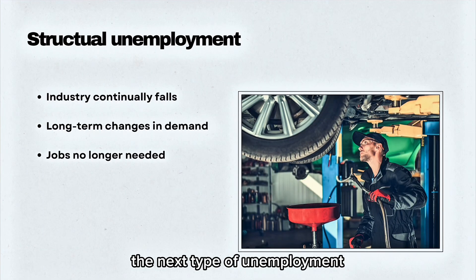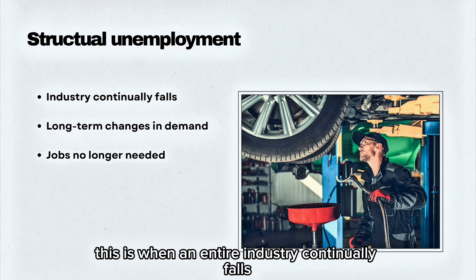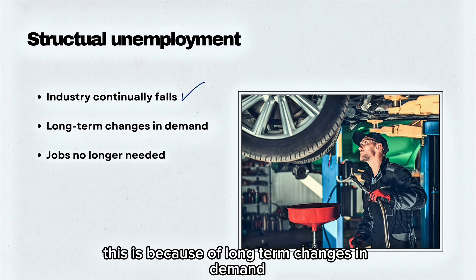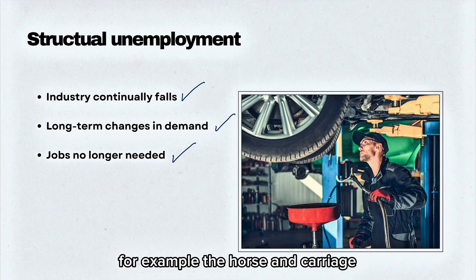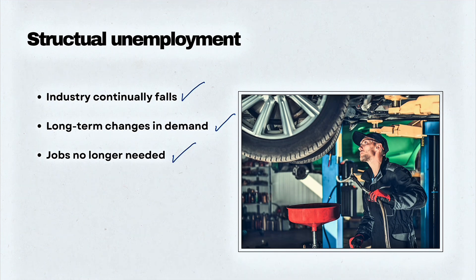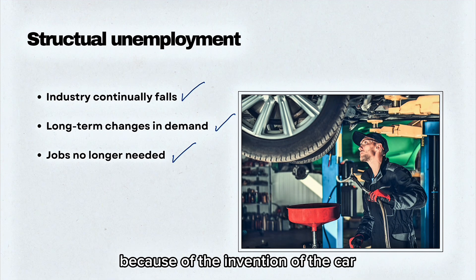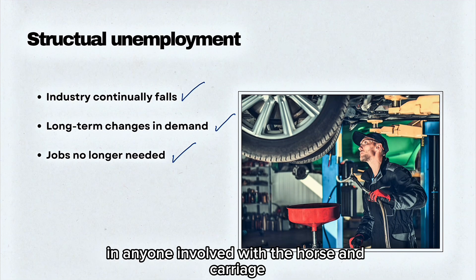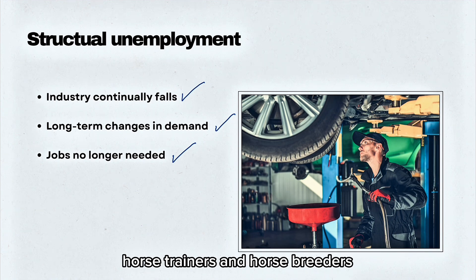The next type is structural unemployment, which occurs when an entire industry continually falls due to long-term changes in demand, so the jobs are no longer needed. For example, jobs surrounding the horse and carriage are no longer needed because of the invention of the car. This structural change caused mass unemployment for anyone involved, such as stable masters, horse trainers and horse breeders.